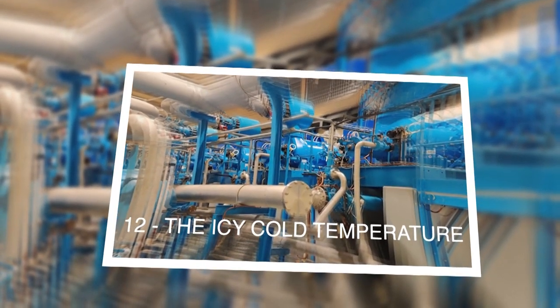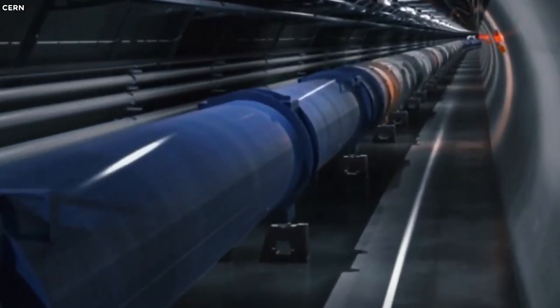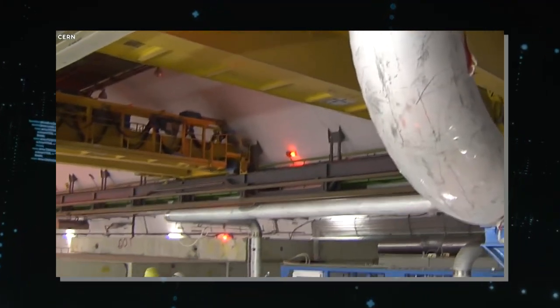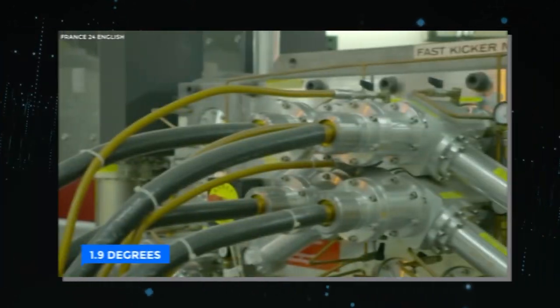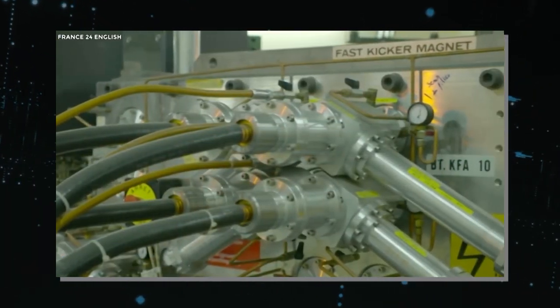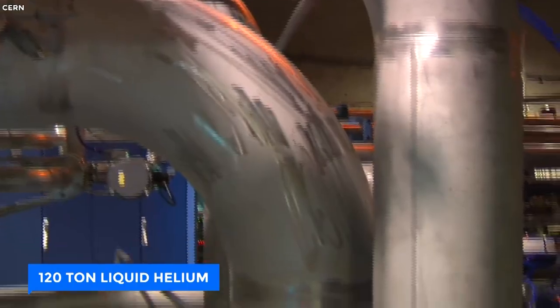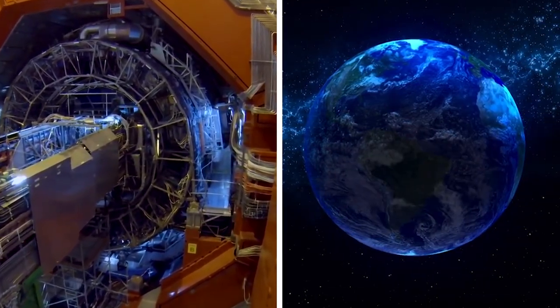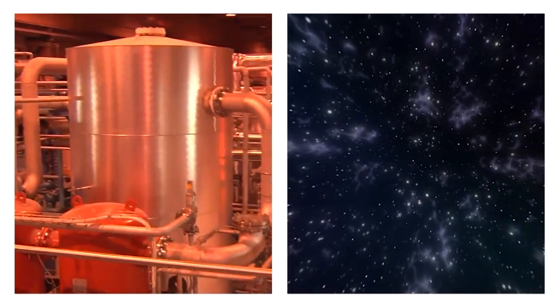The Icy Cold Temperature. In the chilling atmosphere of the Large Hadron Collider, a high level of frostiness prevails, with temperatures as low as an astonishing minus 271 degrees Celsius, a mere 1.9 degrees above absolute zero. To attain this unparalleled cold, a remarkable 120 tons of liquid helium come into play, earning the LHC the crown of Earth's coldest spot. It's even colder than the vast expanse of outer space itself.